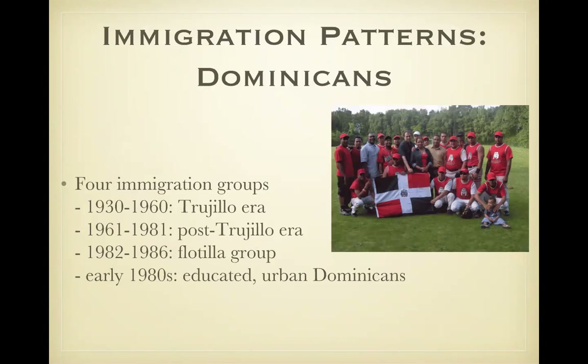Dominican immigration patterns — there were four main patterns. The Trujillo era: Dominicans came to the U.S. to escape the reign of President Rafael Trujillo. Post-Trujillo, immigration slowed because of economic and social conditions. Flotilla era: Dominicans left the country by boat to escape oppressive poverty. And in the 1980s they came seeking employment.